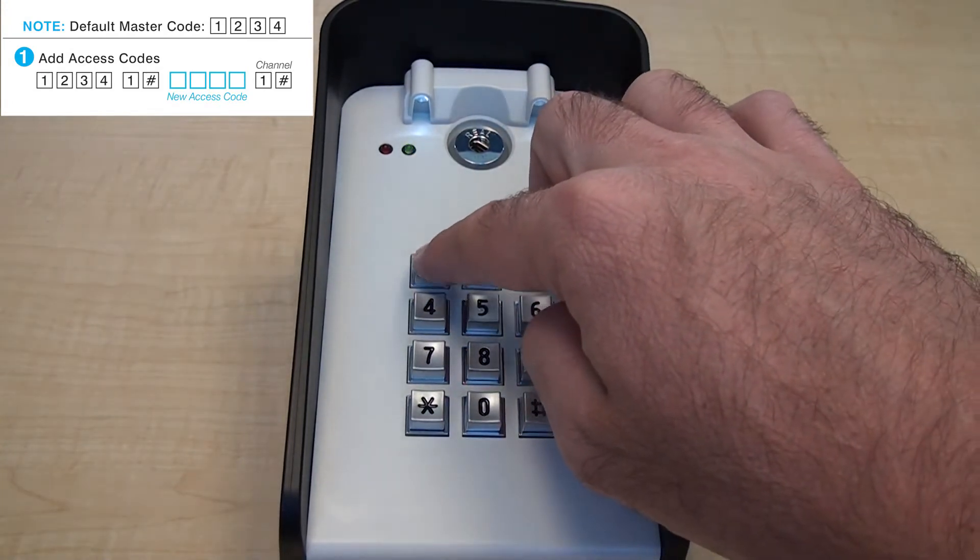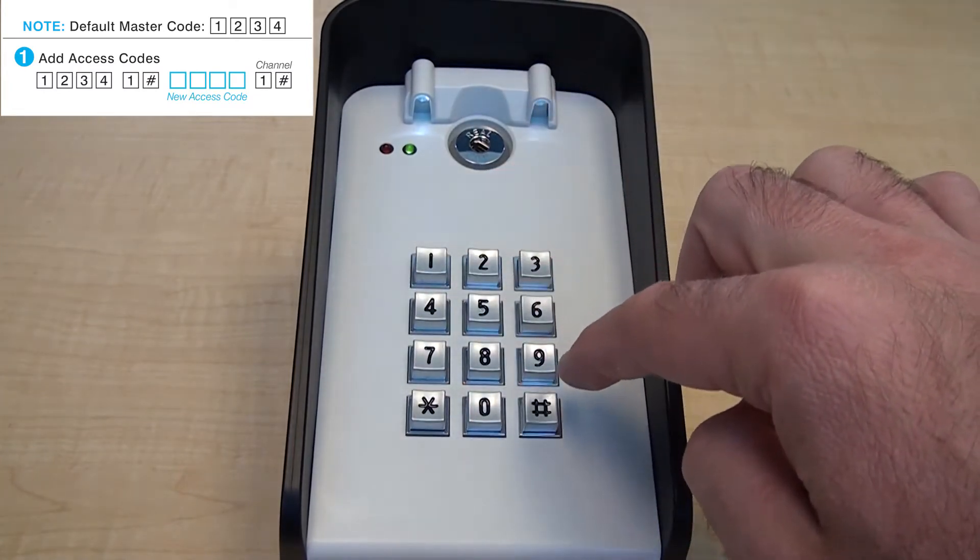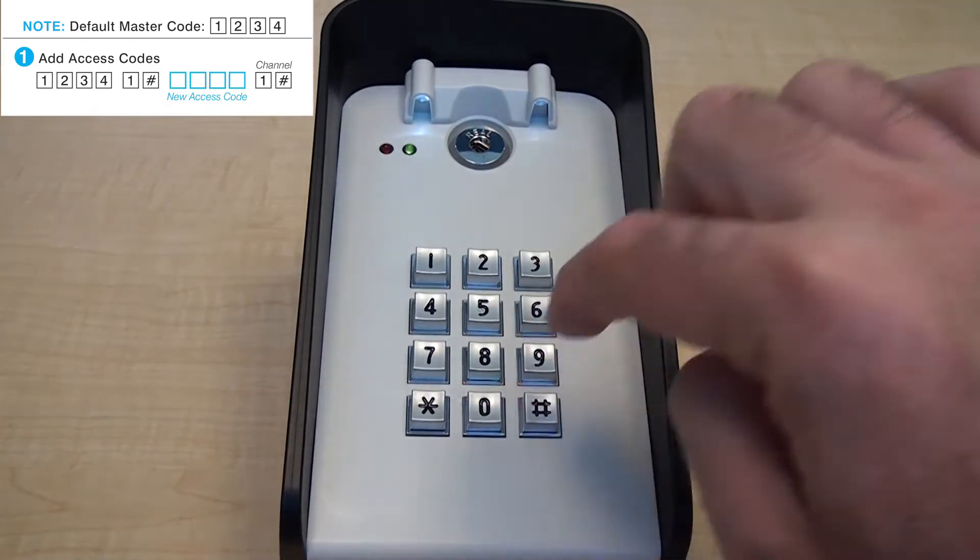Enter the new access code. Then enter the channel you wish to add the access code into. This keypad has just one channel. Follow this by pressing pound.